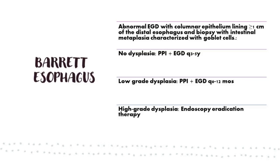Because Barrett's esophagus is a precancerous condition, it must be monitored. If there is no dysplasia, give PPIs and perform upper endoscopy (EGD) every three to five years. If biopsy shows low-grade dysplasia, treat with PPIs and perform EGD every six to twelve months. If the biopsy shows high-grade dysplasia, perform endoscopic eradication therapy.